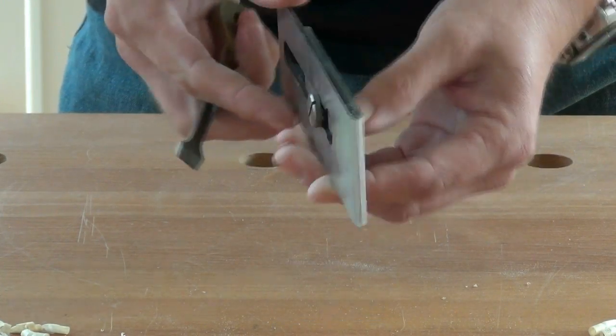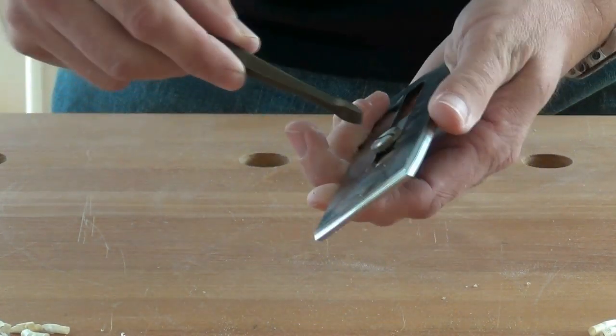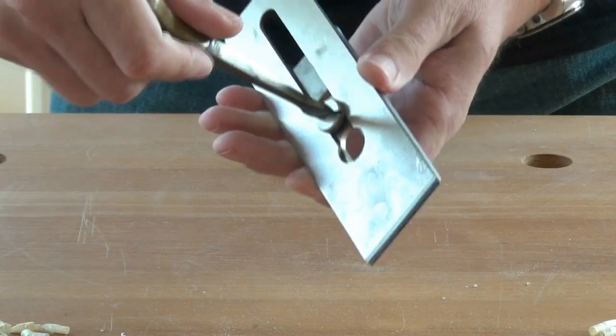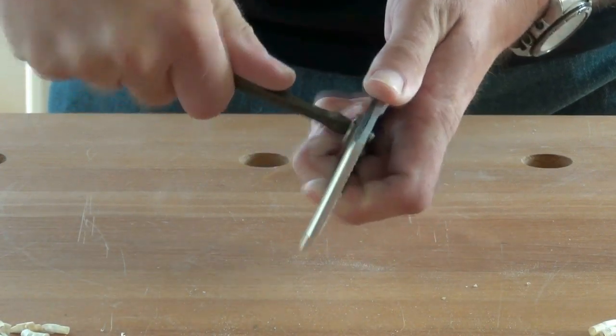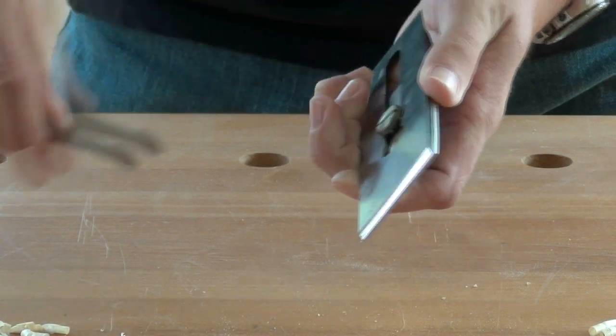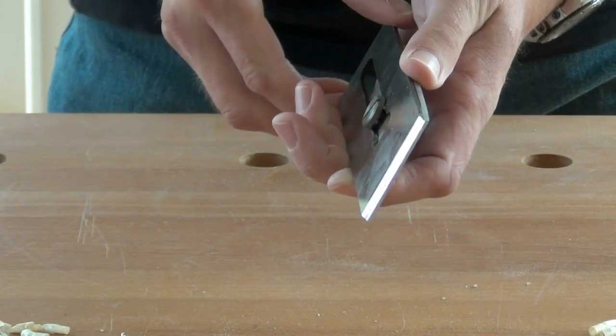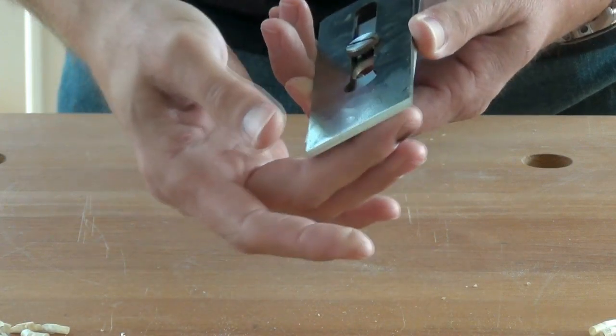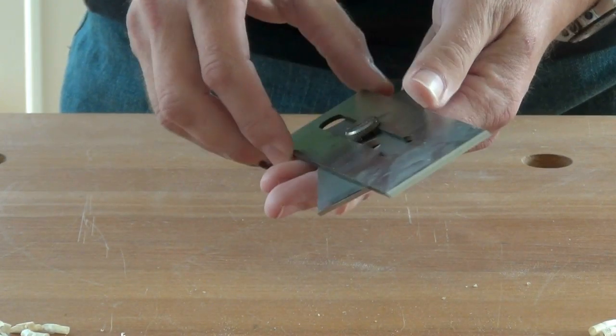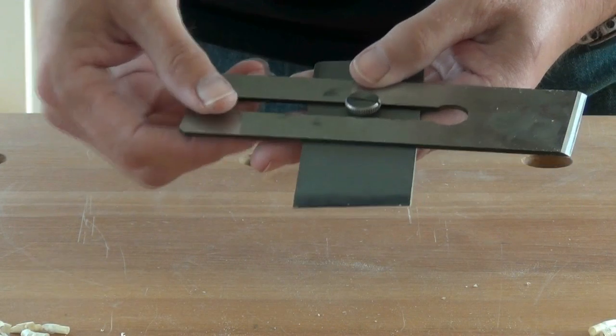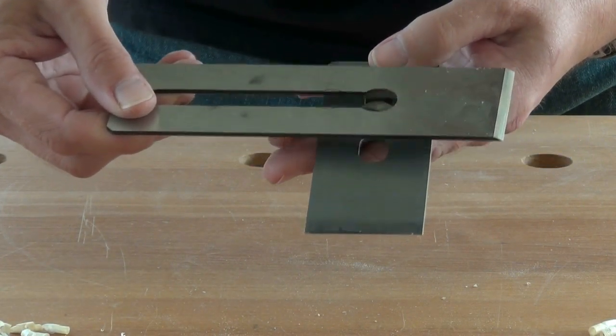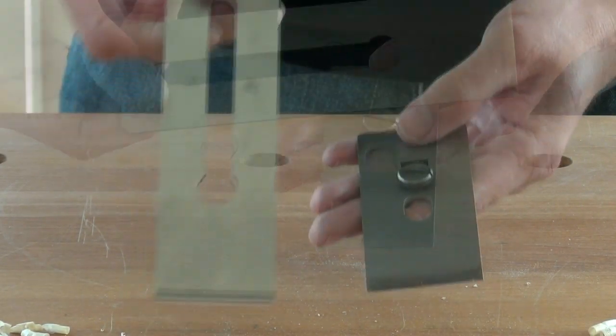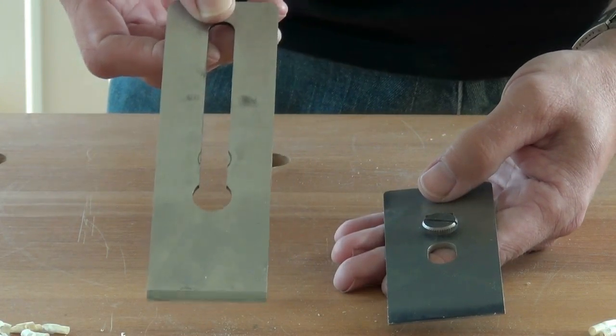The blade and chip breaker can be separated by undoing the screw which screws into the chip breaker. Be careful to slide the edge of the blade well away from the chip breaker, twist it round, and then lift off. This is a replacement blade in this Stanley.